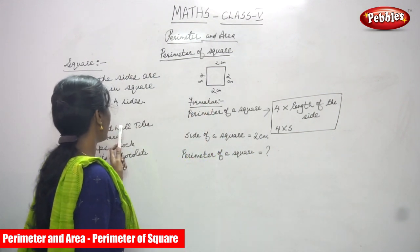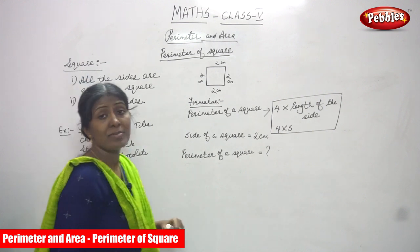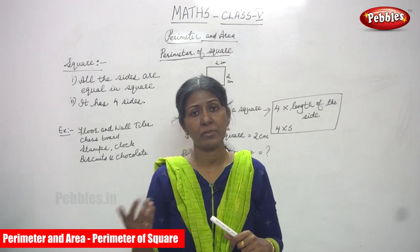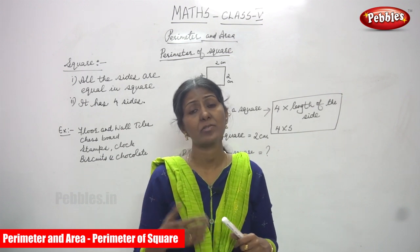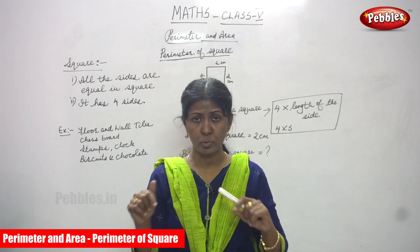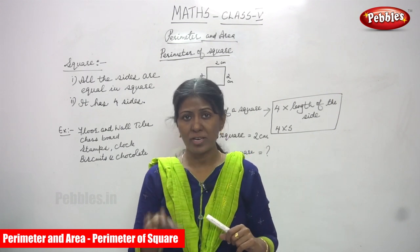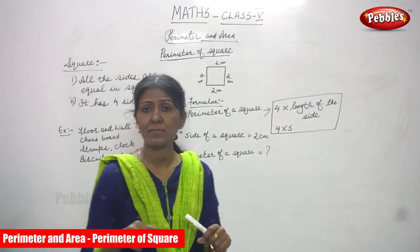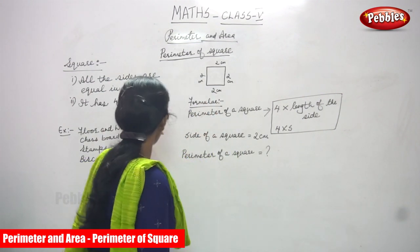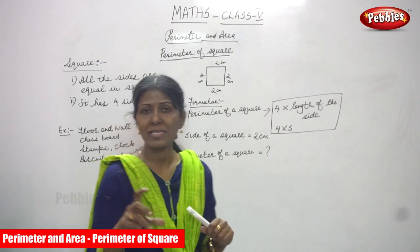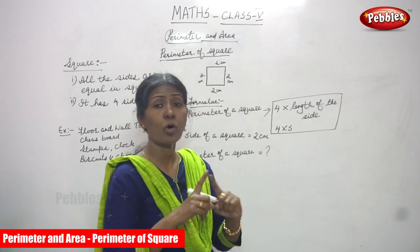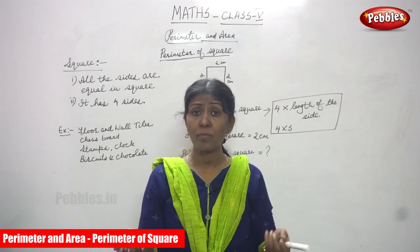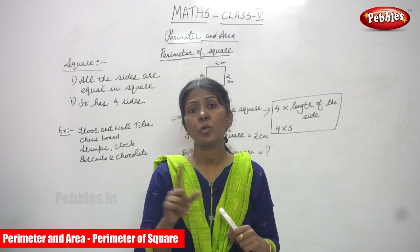An example of square shapes in real life: floor and wall tiles. You know you have seen tiles in your home — you can see them, or even in your friend's house, relative's house, or neighbor's house. Tiles are in square shape. The next example is a chess board — you play with the chess board and it is also in square shape. And the next one is stamps — most stamps are in square shape. And a clock — you can see a square-shaped clock at the shopping mall or even at home.